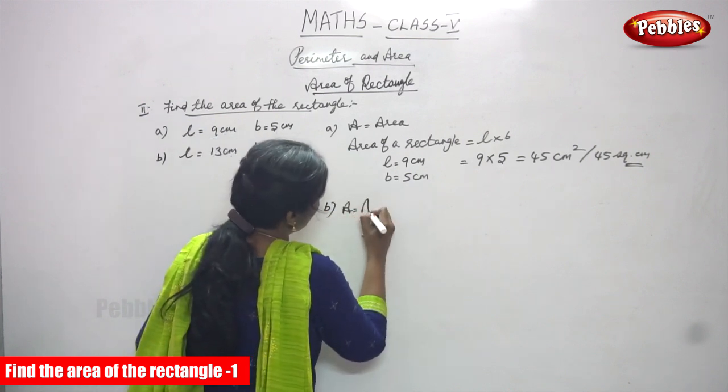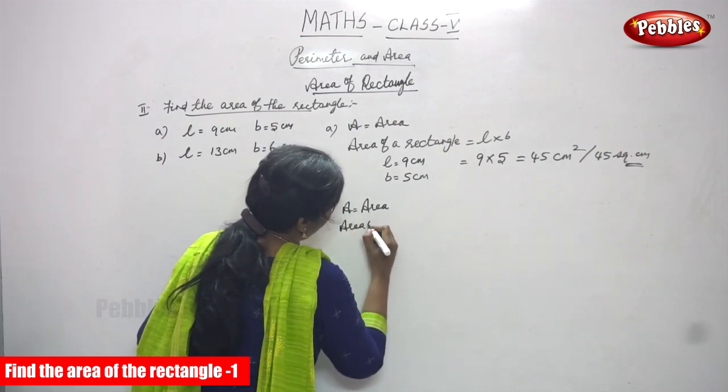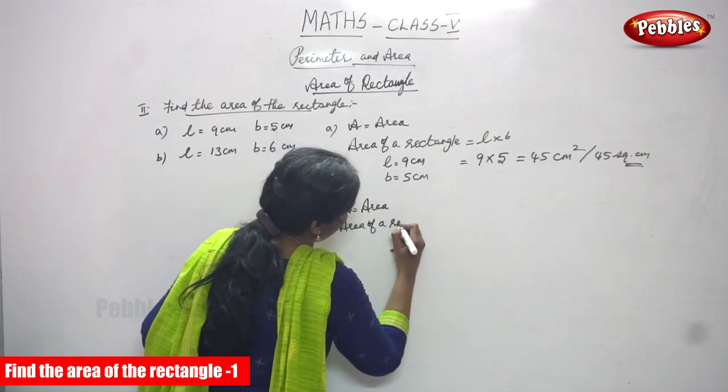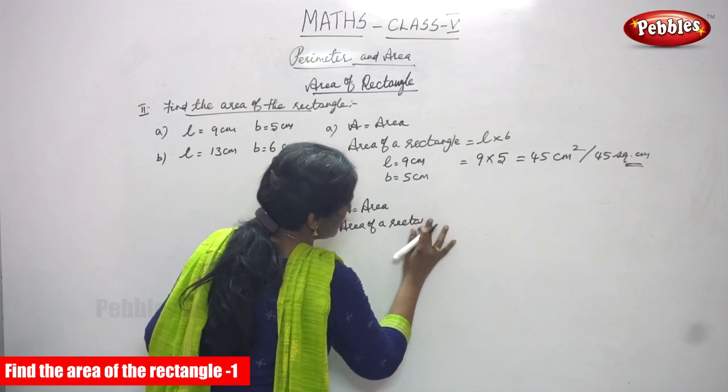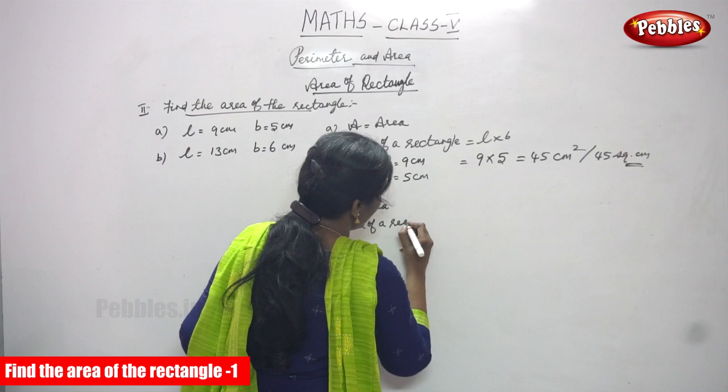A is equal to, I've told you area and again, you have to write the area of a rectangle formula. You must always write the formula, don't forget it.